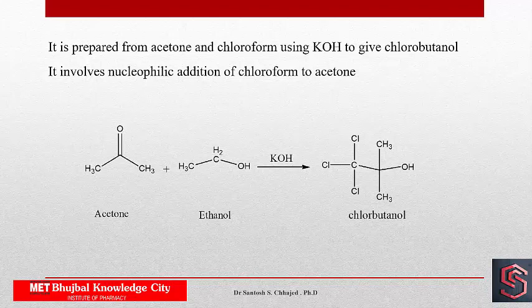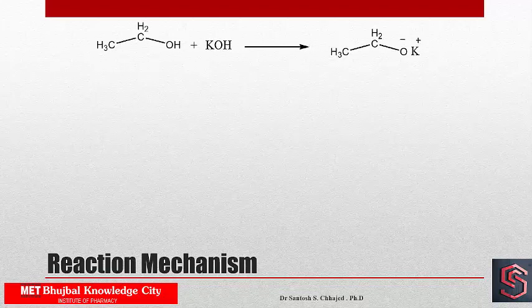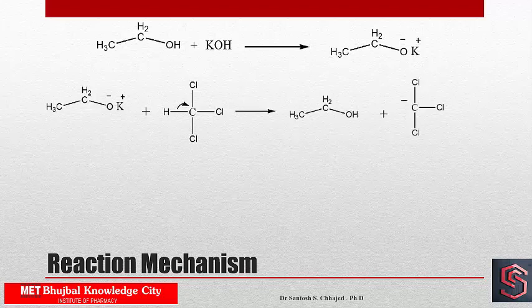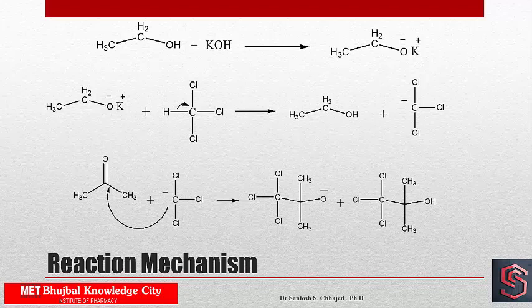Mechanistically, when ethanol reacts with KOH, formation of potassium ethoxide takes place. This potassium ethoxide, when it reacts with chloroform, abstracts the acidic hydrogen of chloroform to form a carbanion, and ethanol is regenerated.